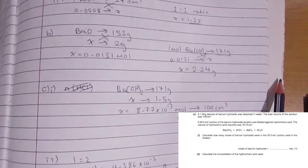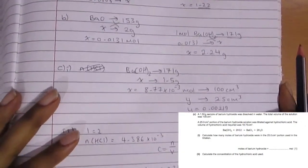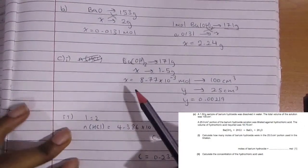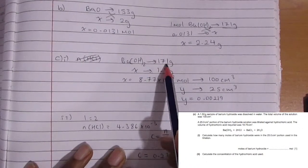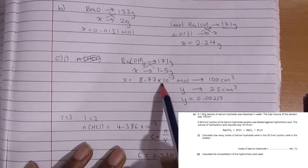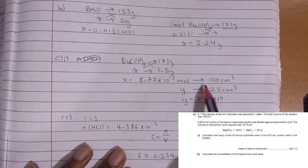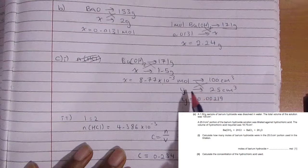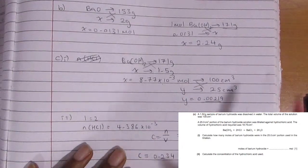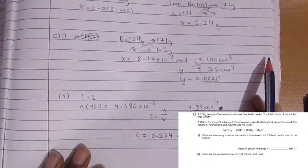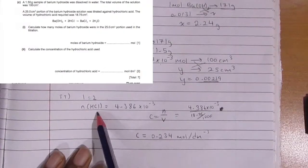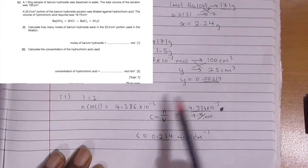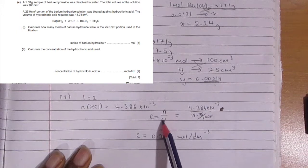And it's a one-to-one ratio, so one mole of barium hydroxide will give you 171 grams. Cross multiply will give you 2.24 grams. Now the barium hydroxide again, 171 grams, that's one mole of it, so how many moles will give you 1.5 grams? That would be 8.77 times 10 to the power of negative 3. But that's only in 100 centimeter cubed. They told us how many moles in 25, so you're going to cross multiply and it'll give you 0.00219.